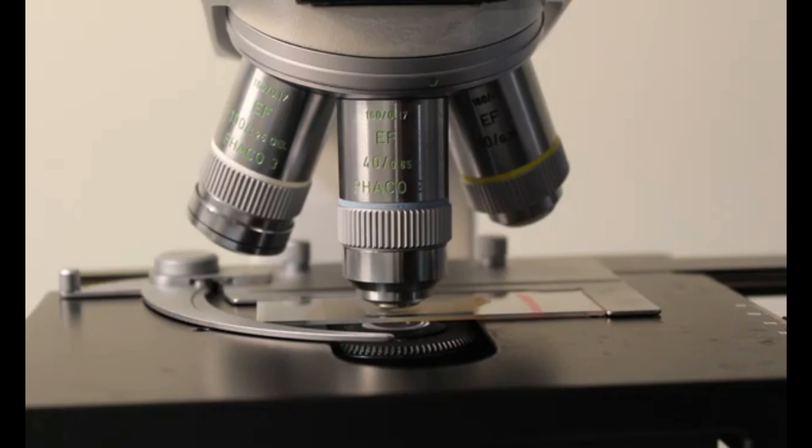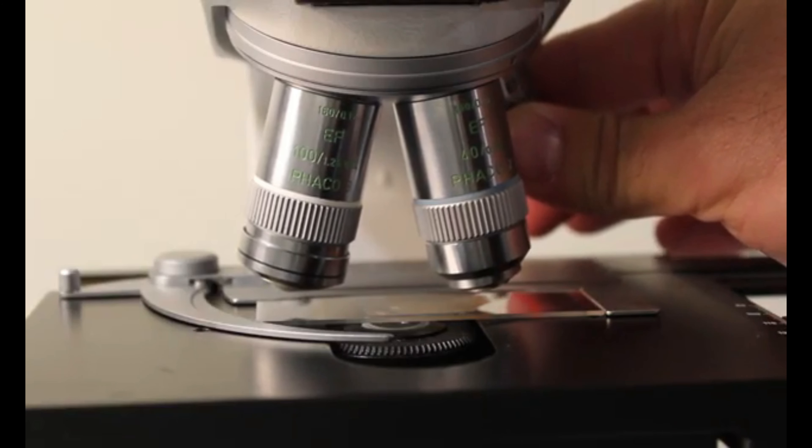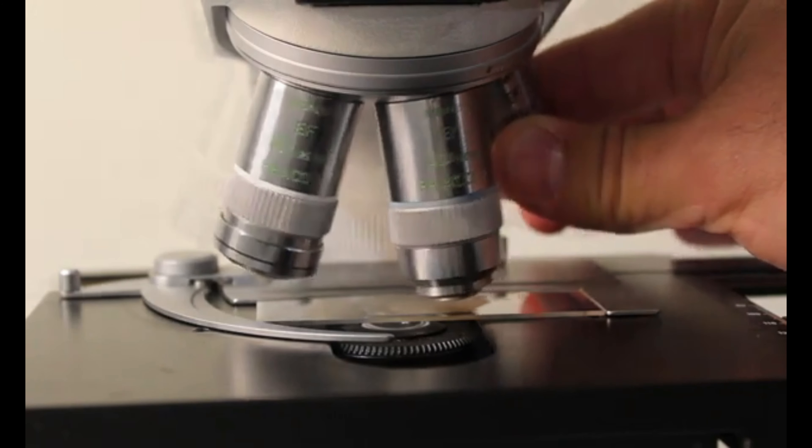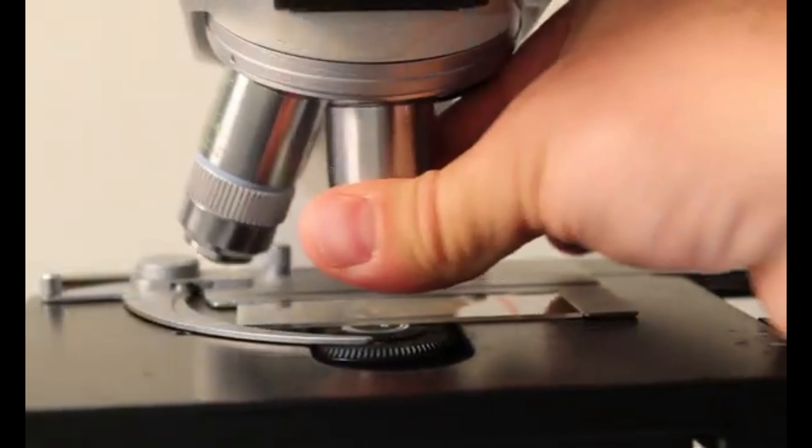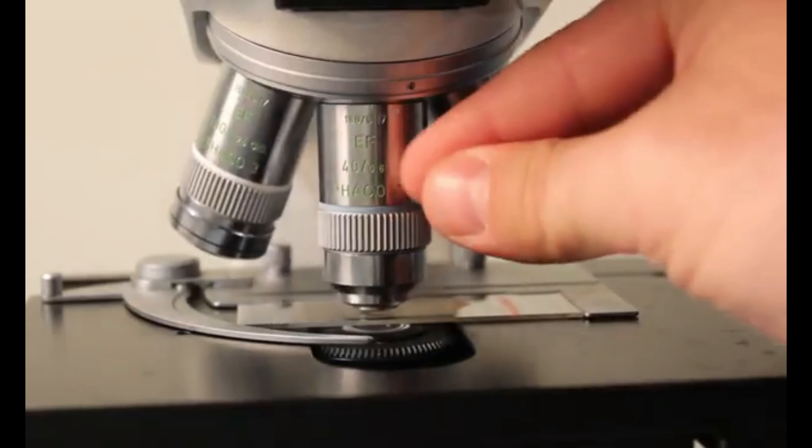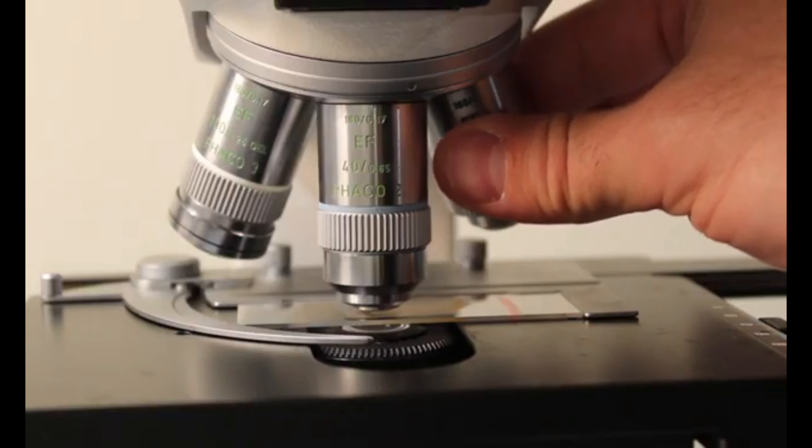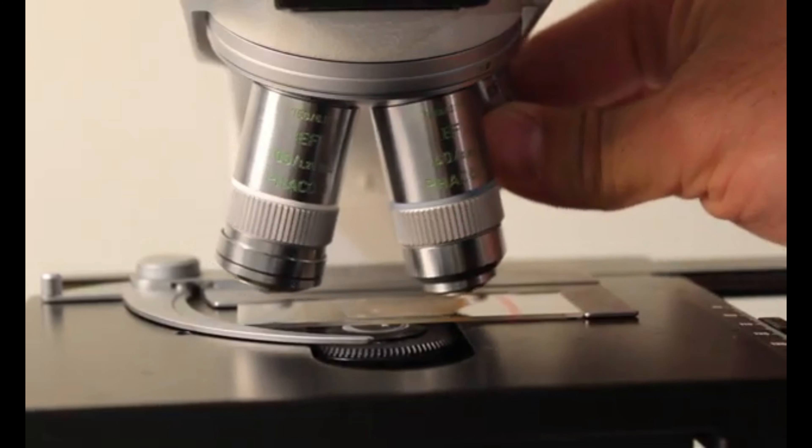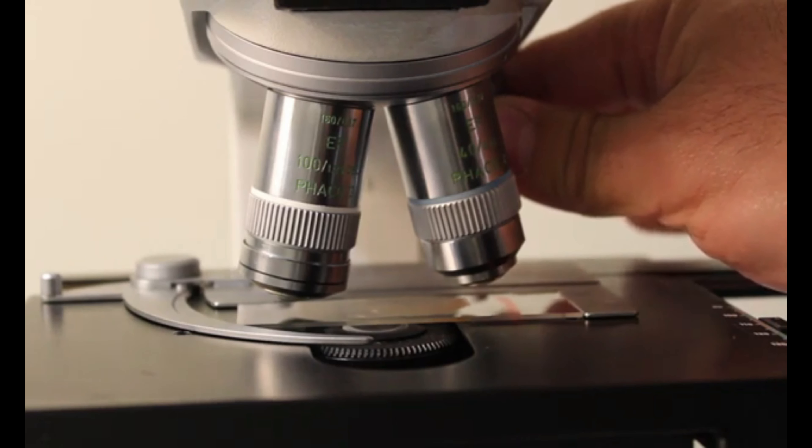Now, one thing that is important is whenever you're switching between air lenses, so that is lenses that image the sample with nothing between the lens and the sample itself, you want to be very careful not to rotate in an oil or a water objective lens. Because if you do this incorrectly, you could damage your most expensive lens on your microscope. Ideally, you should have your microscope configured so that you can rotate in the same direction from your lowest magnification lens to your medium magnification lens or medium magnification lenses and have your oil immersion lenses or your highest magnification lenses at the end of that rotation curve.